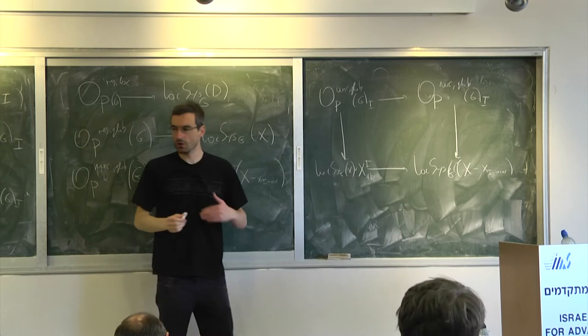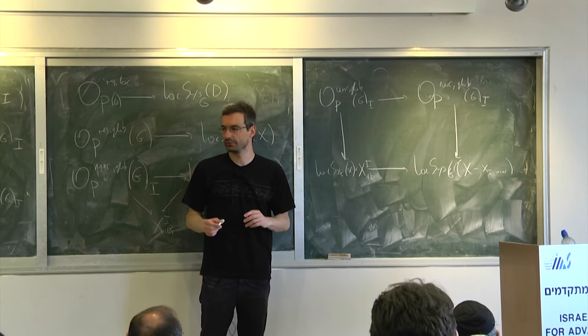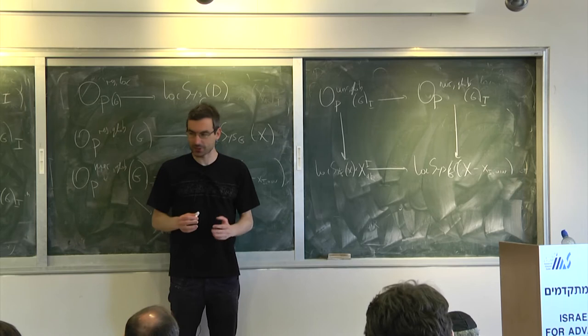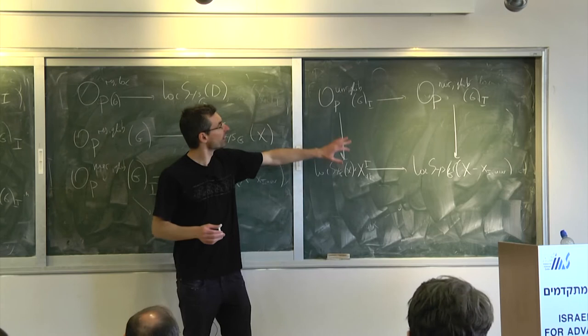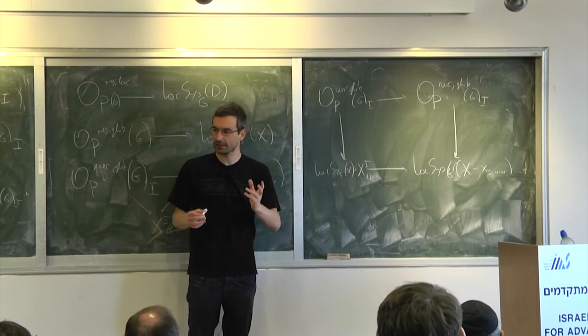Global unramified opers are exactly those meromorphic opers such that the underlying local system is regular. This is what Sasha wanted from the beginning — in a sense it's easy to give the definition. It's a good exercise to write down the complete scheme-theoretic definition: you start with a local system and then you have to specify an opers structure away from the punctures.